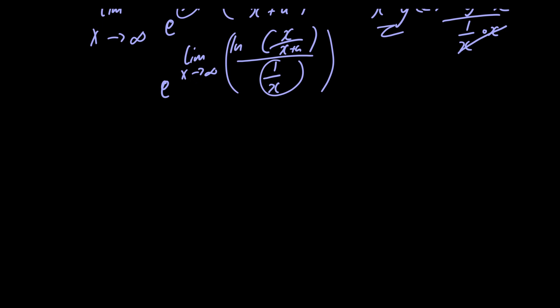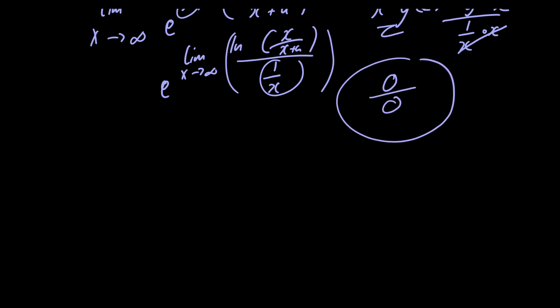Notice that if we plug in x equal to infinity, we get the natural logarithm of 1, which is 0, and 1 over infinity, which is also 0. So we have an indeterminate form of 0 divided by 0. Since both functions are differentiable, we can apply L'Hôpital's rule, which involves taking the derivative of the numerator and the derivative of the denominator.